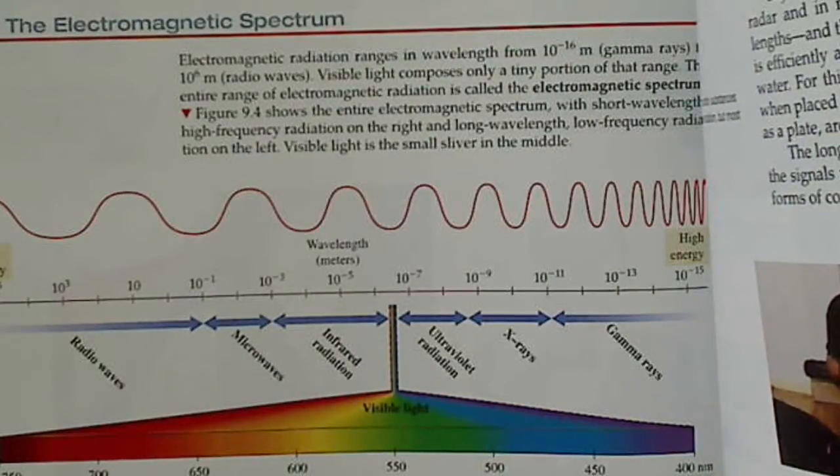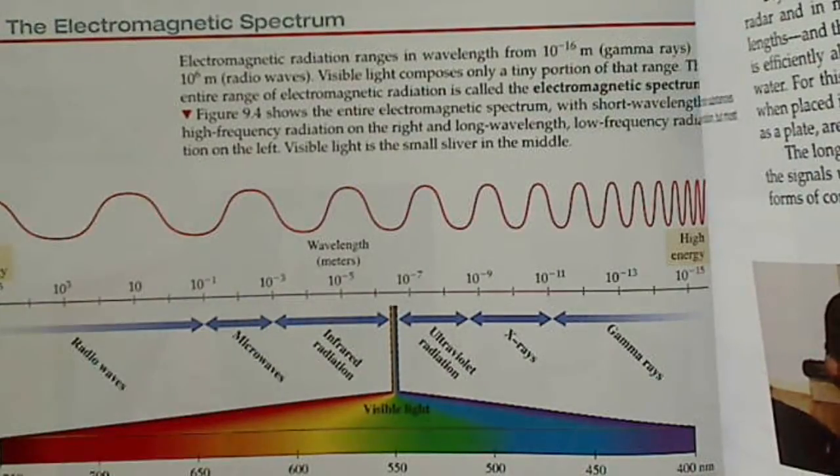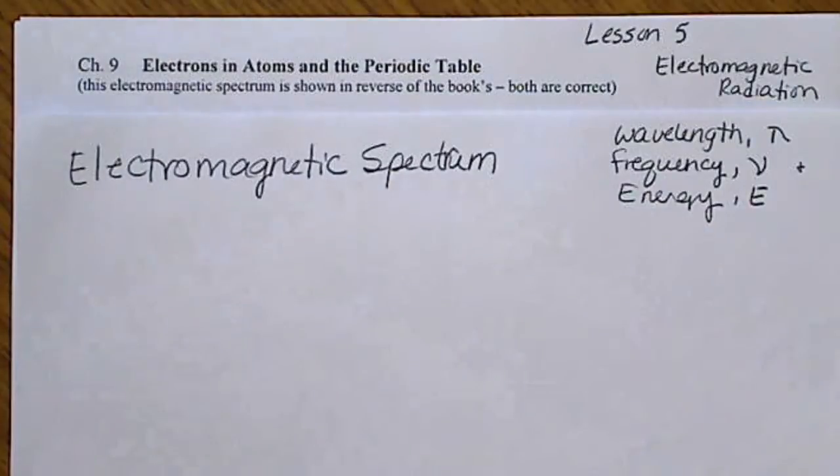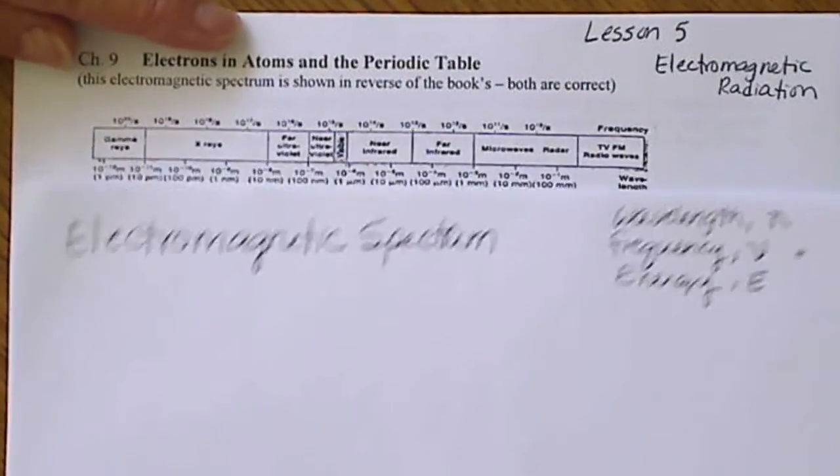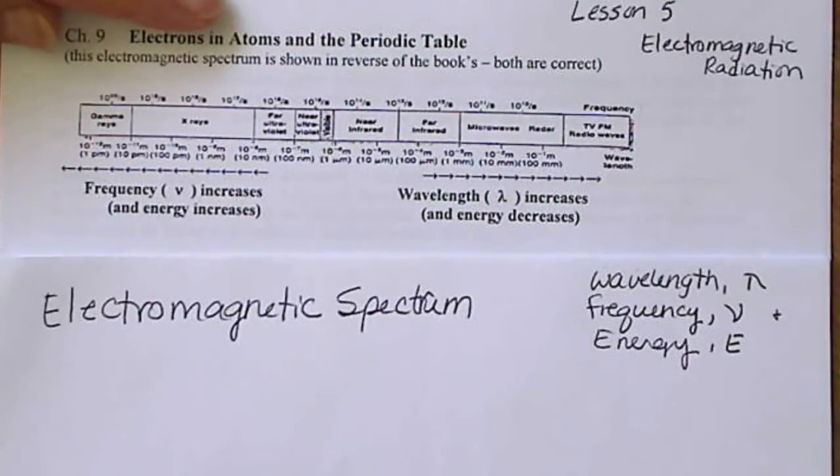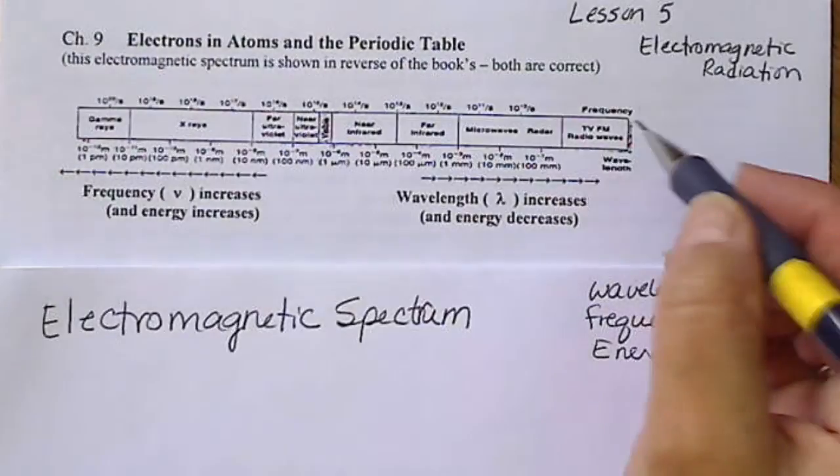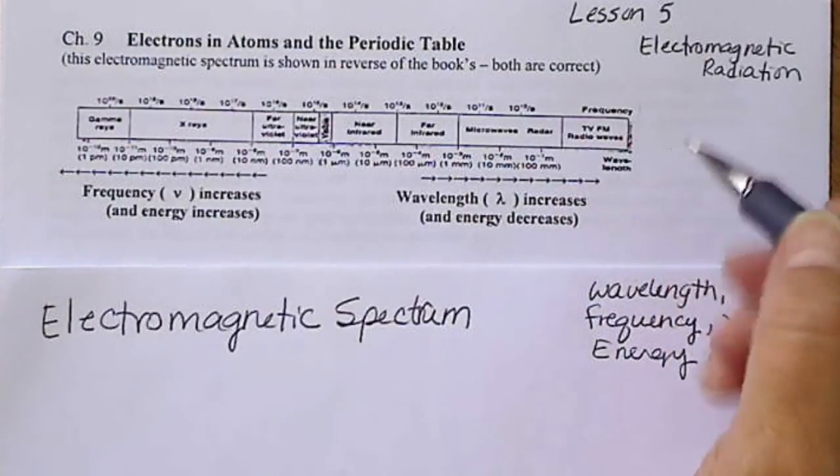So we are going to look at properties like wavelength, which is the length of the wave. And we're going to look at frequency and energy. And so I've got this part on the notes here. And this is backwards in the way the book shows it. I got this out of a physics textbook.